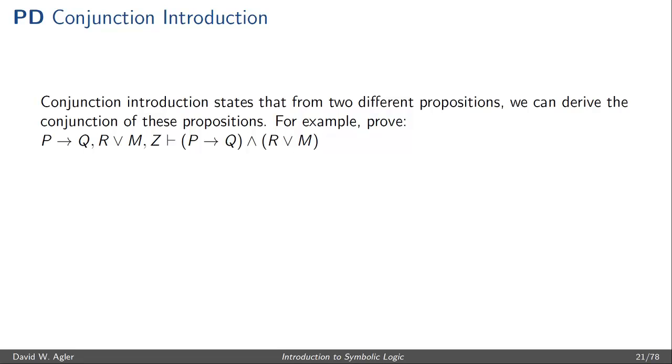Now let's look at a more complicated example. So conjunction introduction simply states that from two different formulas, or propositions, or sentences, we can derive the conjunction of these propositions. So let's look at the really kind of ugly-looking proof or entailment P right arrow Q, R, V, M, Z. And that entails this complex conjunction where the left conjunct is P right arrow Q, and the right conjunct is R, V, M.